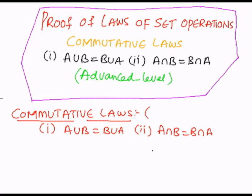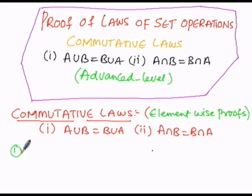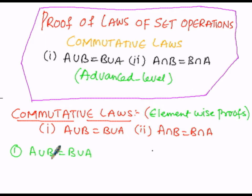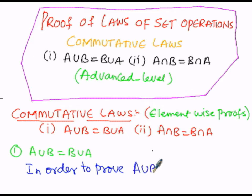We are going to prove the first case: A union B equals B union A. In order to prove this, we have to prove two conditions — first, that A union B (the left-hand side) must be a subset of B union A (the right-hand side), and second, that B union A must be a subset of A union B.